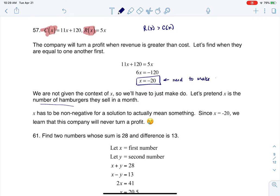because you can't say I need to make negative 20 hamburgers. So let me write this, need to make negative 20 hamburgers. That doesn't make any sense. We can't make a negative number of something.